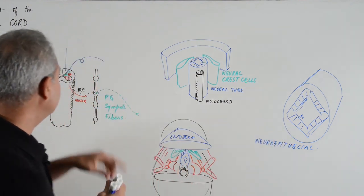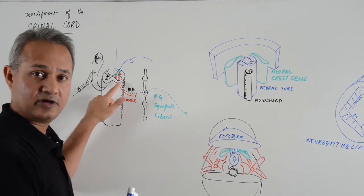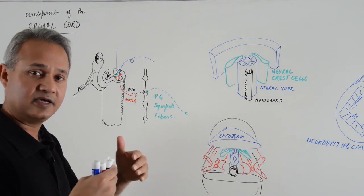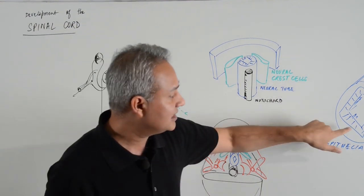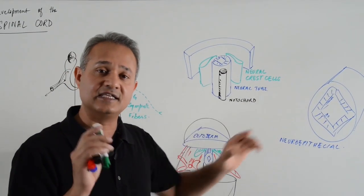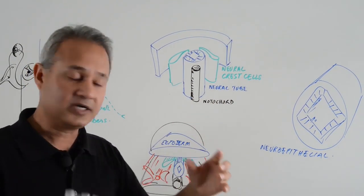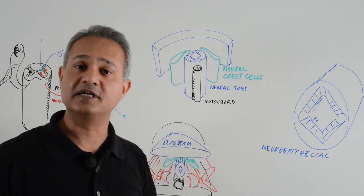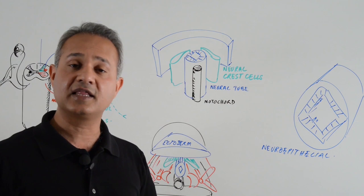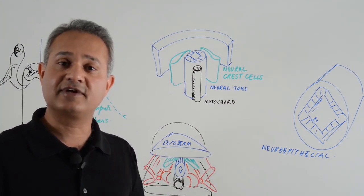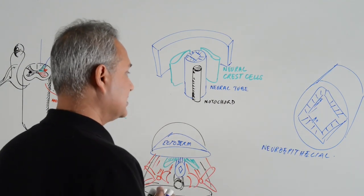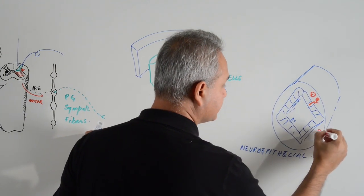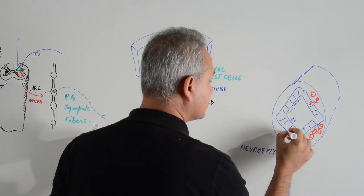Neuroepithelial cells will create a layer called the mantle layer, which divides into the alar and basal layers and gives rise to the gray matter. Once these neuroepithelial cells have divided enough to create the mantle layer and establish the gray matter — this is the USMLE question — they will stop further dividing and convert to a final-state cell called the ependymal cell. So ependymal cells lining the cavities are the actual original neuroepithelial cells that gave rise to the whole nervous system.